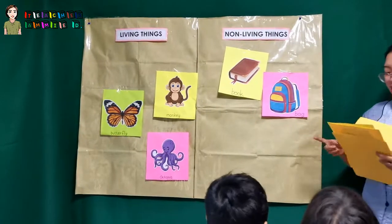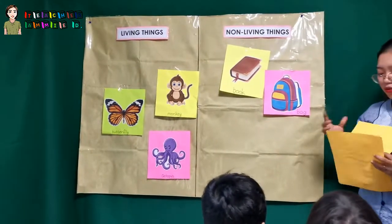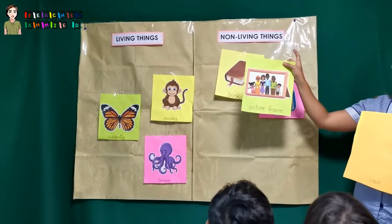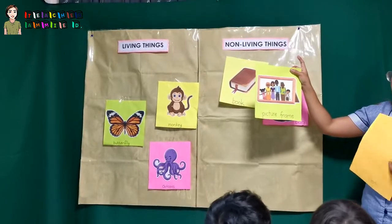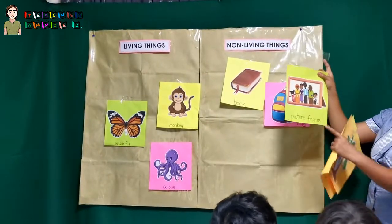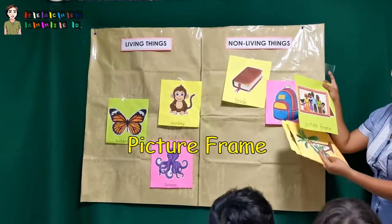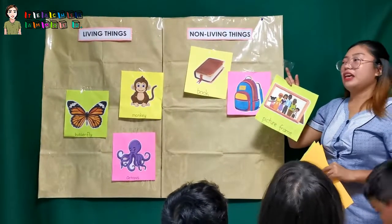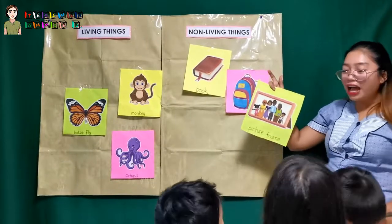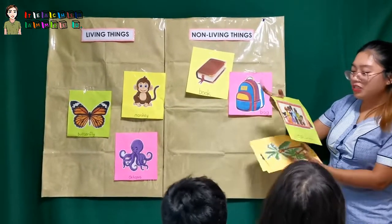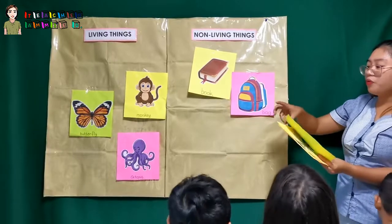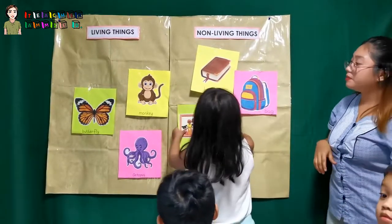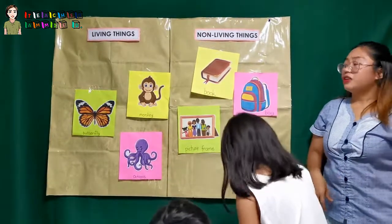Okay, next picture. I have here a — what's this? A family. Family. Okay, family picture or a picture frame. Do you have a picture frame at home? Yes. Okay. So Zeph, can you put — where does the picture frame belong? Living things.